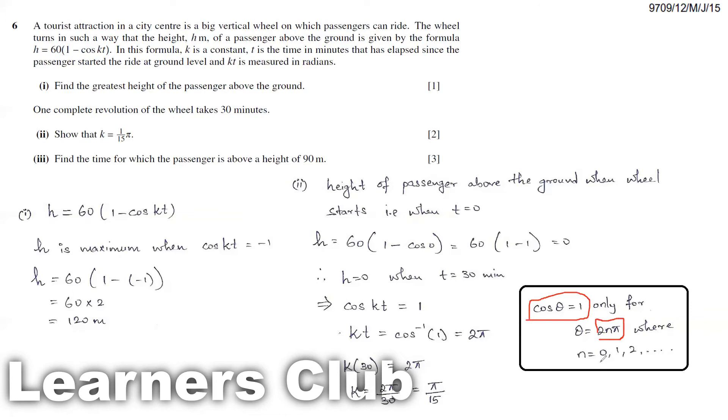So it can be either 0, 2π, 4π. Then you have 3 means 6π, 4 means 8π. So multiples of even numbers, n integers with even numbers, will give cos theta equal to 1.